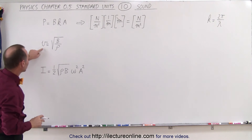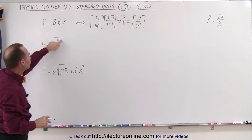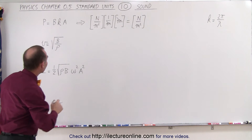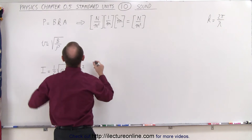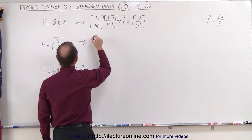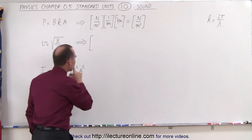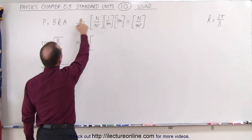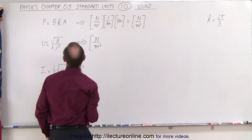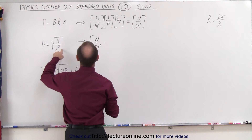How about the second equation? The velocity of sound in air equals the square root of the bulk modulus divided by the density of the air. We're expecting meters per second. The bulk modulus has units of pressure — newtons per square meter — and we multiply that times 1 over the density.